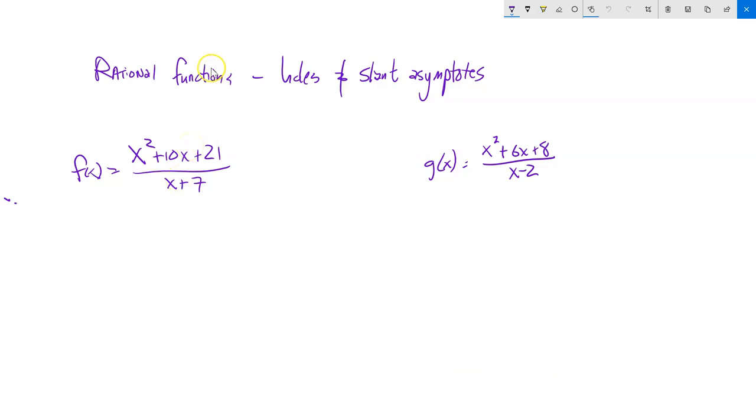So I want to talk about, in rational functions, ways of telling if it has a hole or a slant asymptote. Both of these come out of that same thinking that we do with horizontal asymptotes. This is about extreme behavior. We're talking about as x gets really big, as x approaches infinity, what happens?